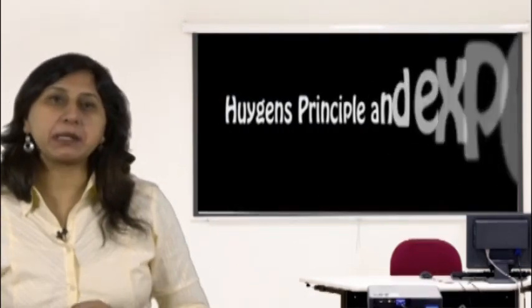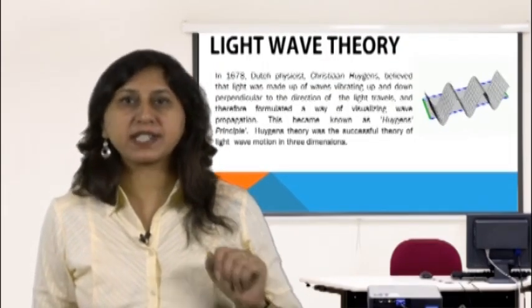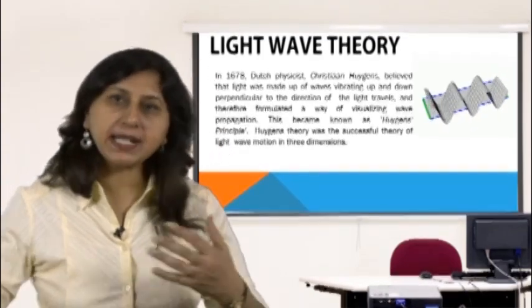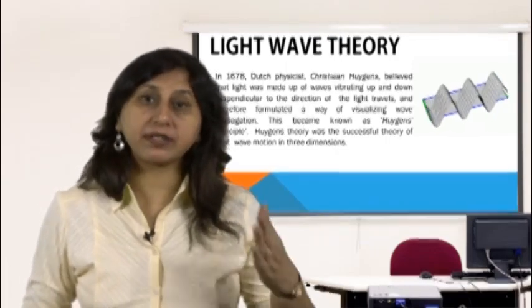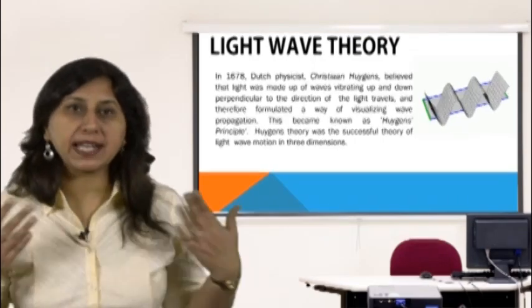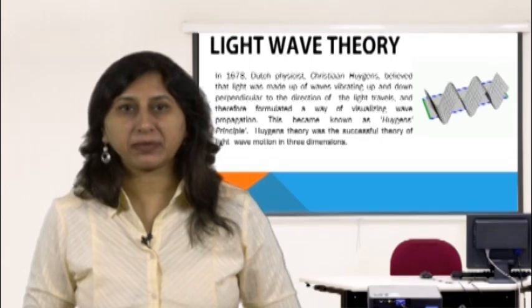Huygens' principle and experiment: in 1678, Dutch physicist Christiaan Huygens believed that light was made up of waves vibrating up and down perpendicular to the direction of travel, and formulated a way of visualizing wave propagation — known as Huygens' principle. He envisioned a wave crest advancing by imagining each point along the wave crest to be a source point for small circular expanding wavelets.